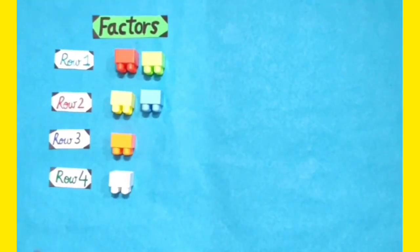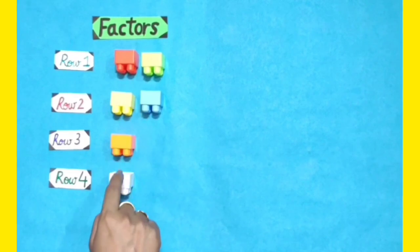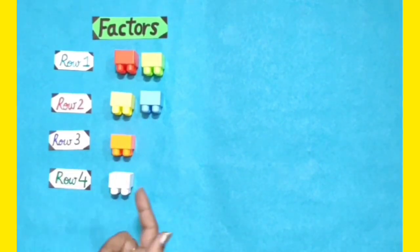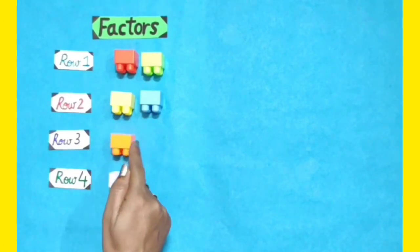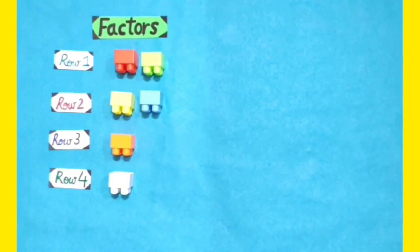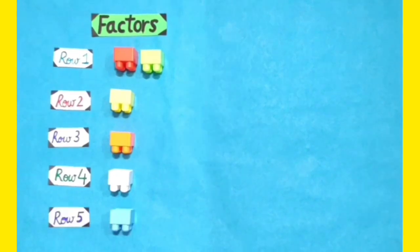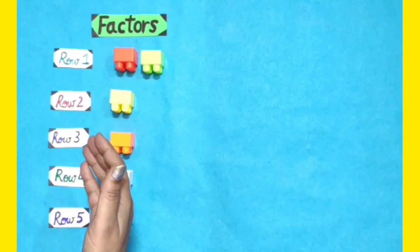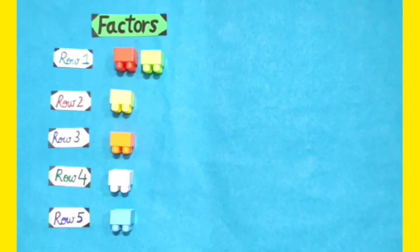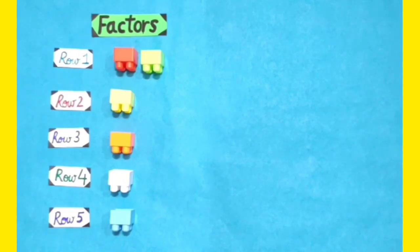Dear students, I have tried to arrange these blocks in 4 rows but could not get equal number of blocks in each row, so this cannot be represented in multiplication form. Similarly, by placing all the blocks in 5 rows, we do not get equal number of blocks in each row, so this also cannot be represented in a multiplication form.